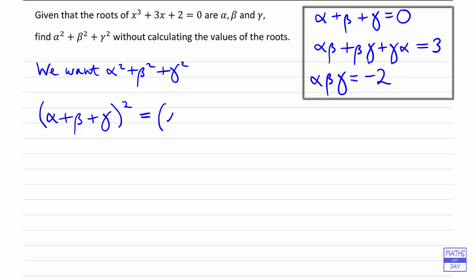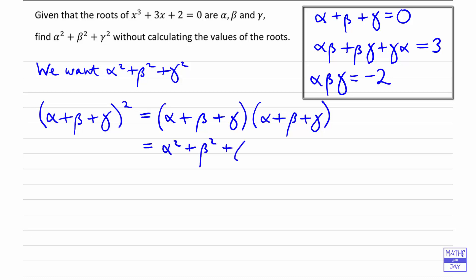So we're going to have (alpha plus beta plus gamma) all squared, and see what that gives us. Remember what that means is (alpha plus beta plus gamma) multiplying (alpha plus beta plus gamma). When we multiply that out, we're going to get alpha squared plus beta squared plus gamma squared. But that's not all, because we're also going to get alpha times beta, alpha times gamma, and so on. In fact, we should get a total of six more terms, giving us a total of nine terms, as we're multiplying three terms by three. So we've got two each of alpha-beta, beta-gamma, and gamma-alpha.